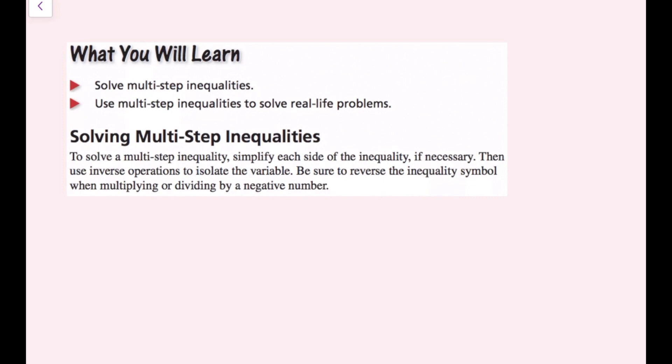Get all your variable terms on one side and your constant terms on the other side. Then when you're multiplying or dividing, just make sure that if you're multiplying or dividing by a negative number, you have to flip the inequality sign.